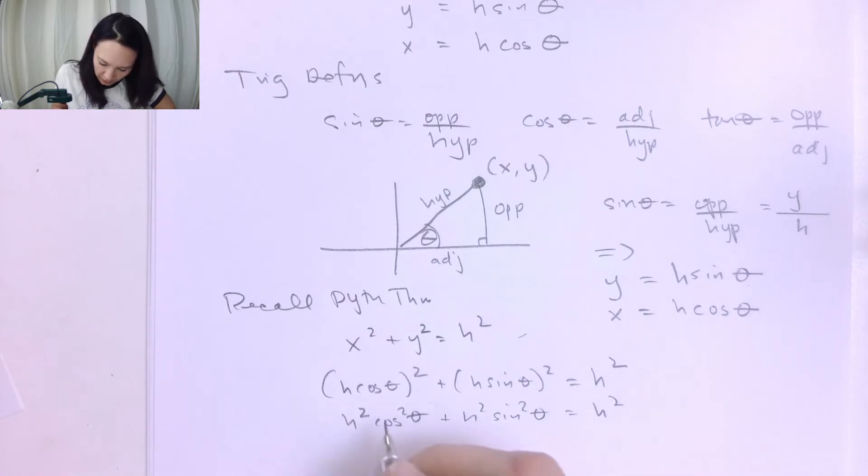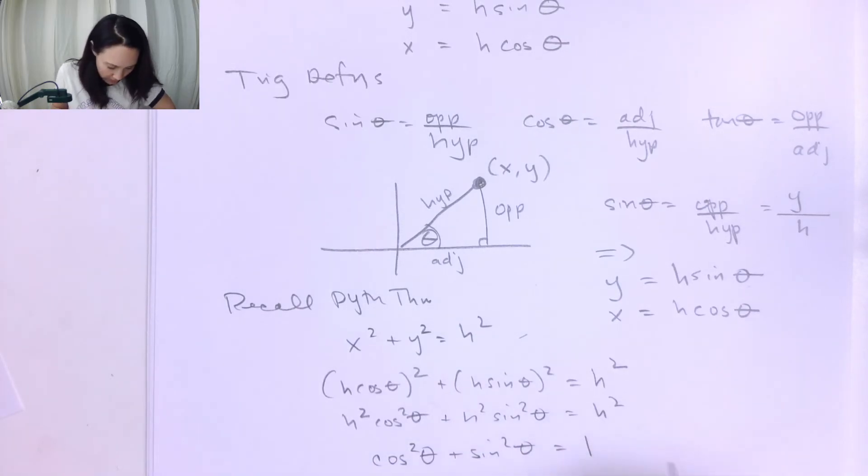If you divide out all the H², those are constants. This just gives us cos² θ + sin² θ = 1.